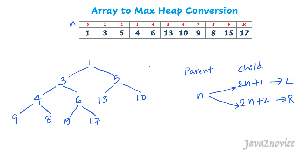Similarly, let's take the element at index 4 as a parent — the element is 6. Its left child is at 2×4+1 = 9, and the element at index 9 is 15, which is its left child. Its right child is at 2×4+2 = 10, and the element at index 10 is 17, which is the right child for node 6.